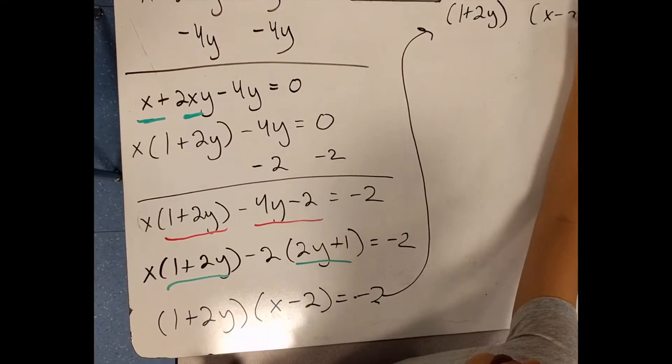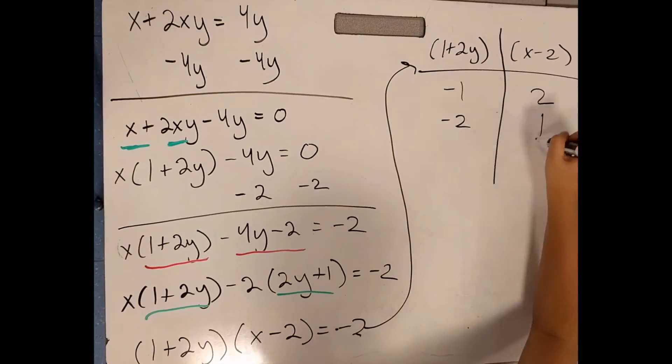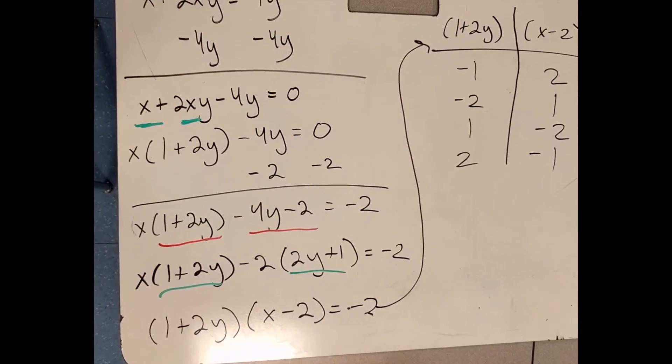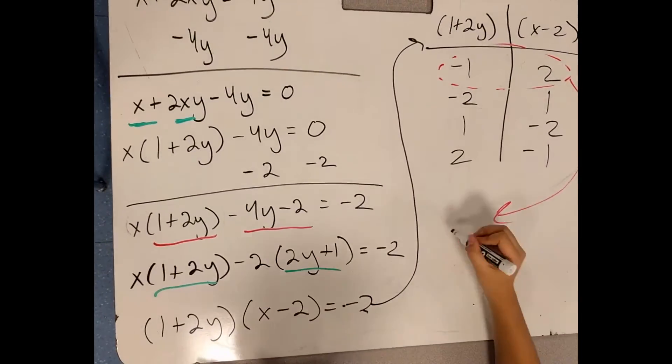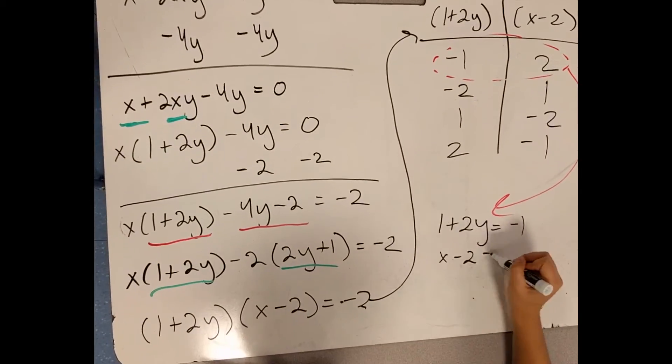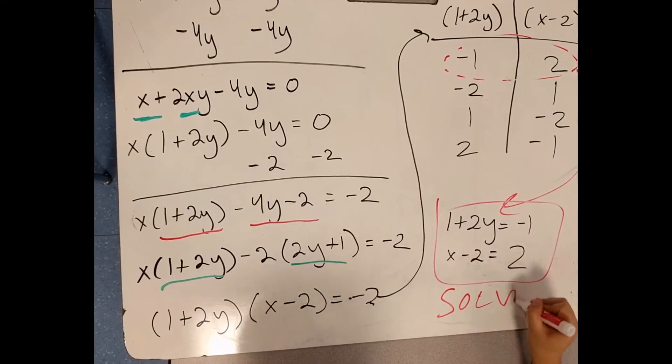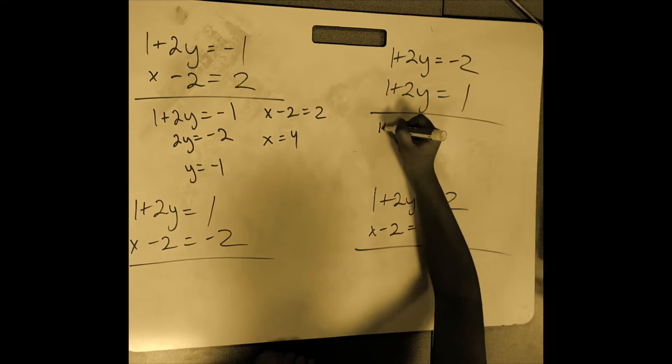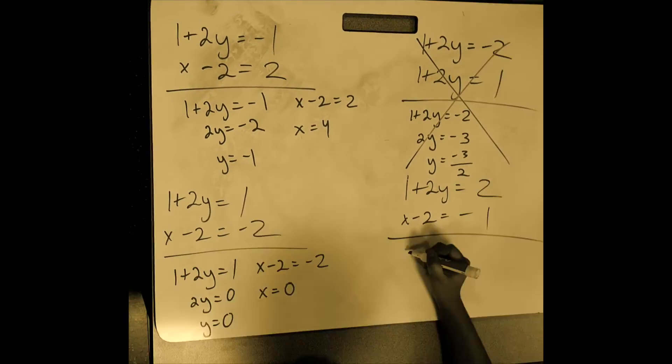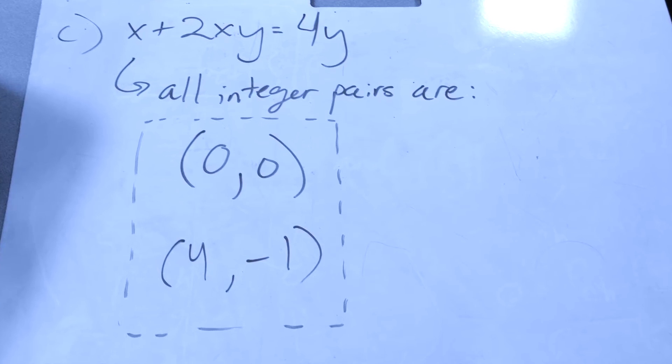The integer pairs that can make negative 2 are: negative 2, 1; 2, negative 1; 1, negative 2; negative 1, 2. We can solve this using systems of equations like in part A. Again, because x and y can only be integer values, we can eliminate some of the possibilities. We find only two pairs that work.